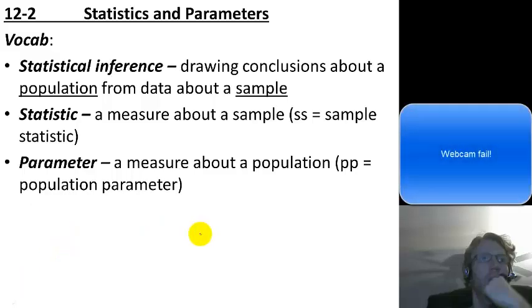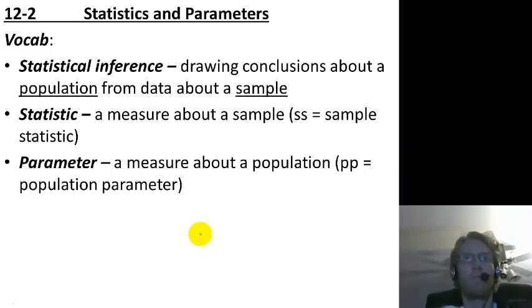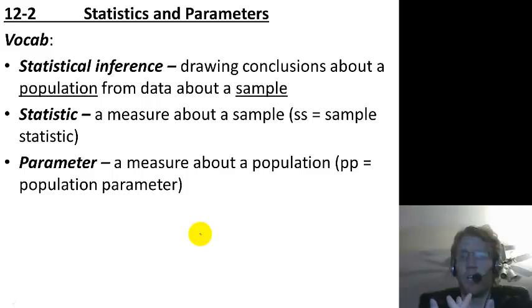Welcome back. This is section 12.2 from the textbook. We're going to be covering statistics and parameters. This one's going to have some actual math equations and we're going to learn how to build on what we had last time which was populations and samples. Here we're going to look at how to actually measure things about those populations and samples to draw numerical conclusions with our data.